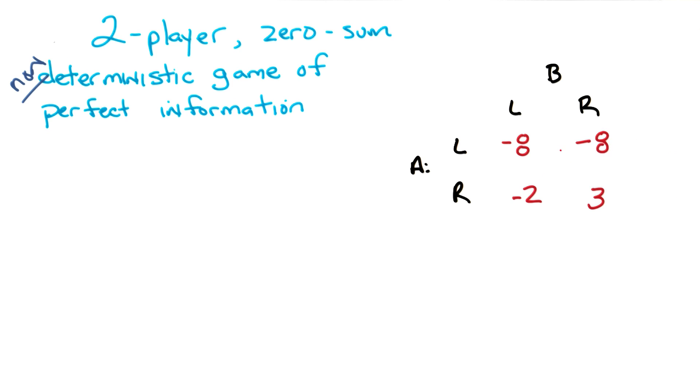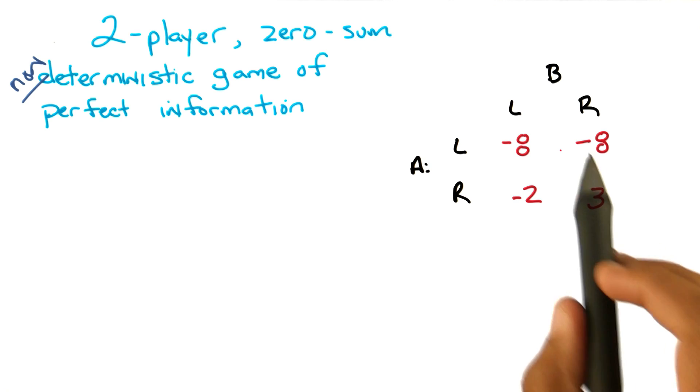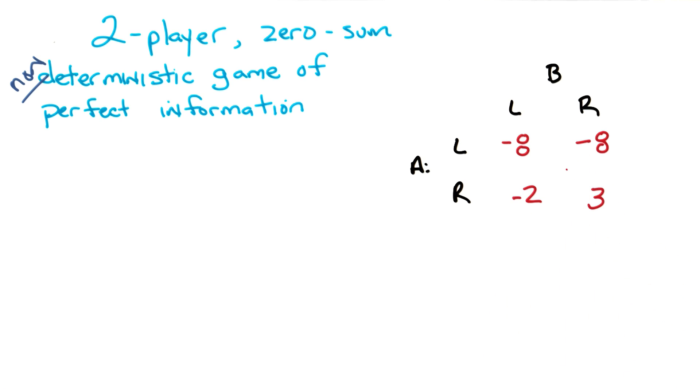But notice that the number you came up with doesn't say anything about expected values and what the probabilities are. It doesn't even matter that it's non-deterministic. Because once you have these numbers, these expected values, that's what you're going to end up with.